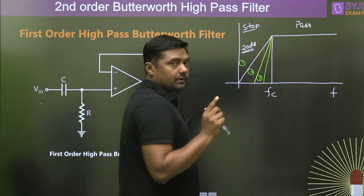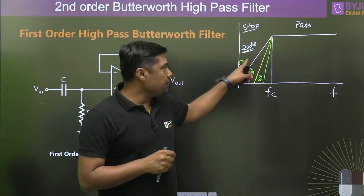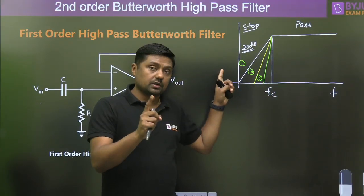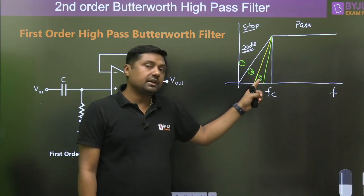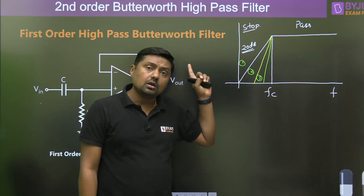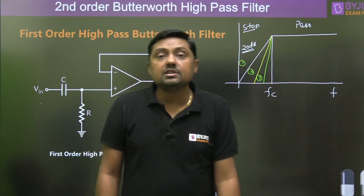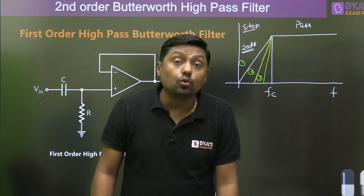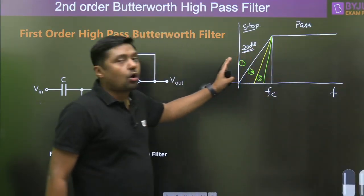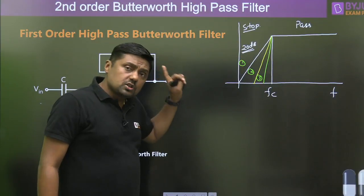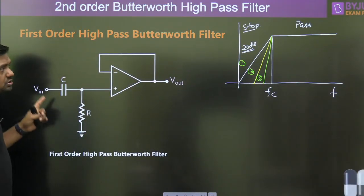The third order filter is nearest to the ideal condition. A 20 dB per decade slope is first order, 40 dB per decade is second order, and 60 dB per decade is third order filter. From the diagram it is clear that the third order is nearest to ideal. In the first order case the slope is 20 dB per decade — this is the frequency response.